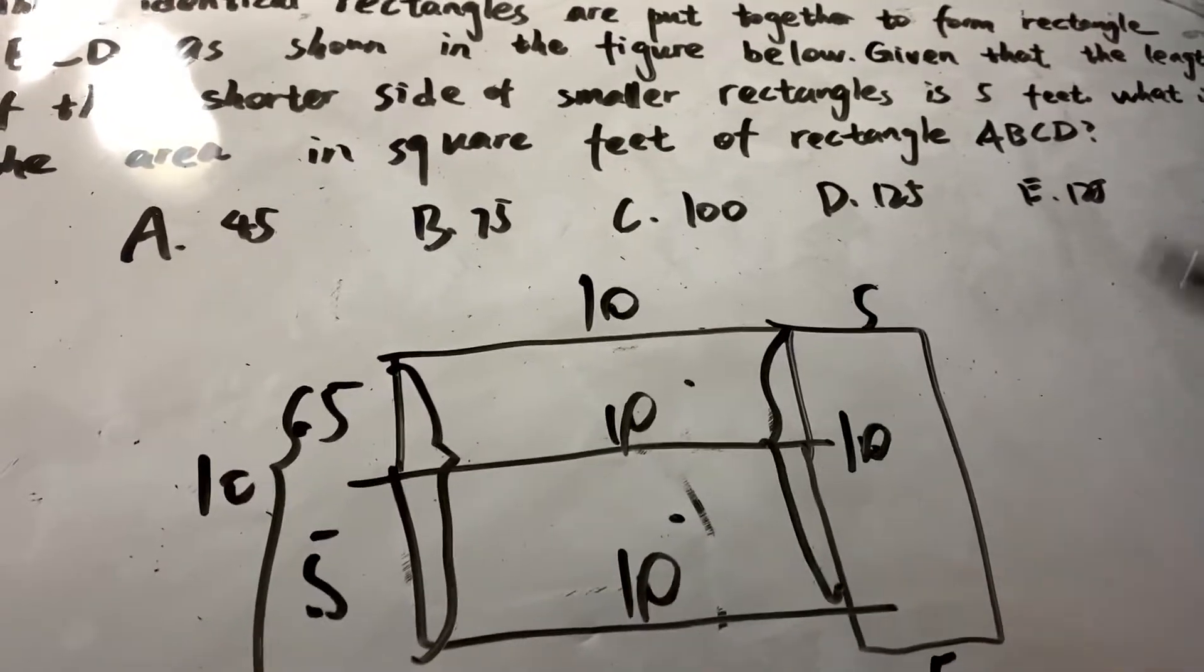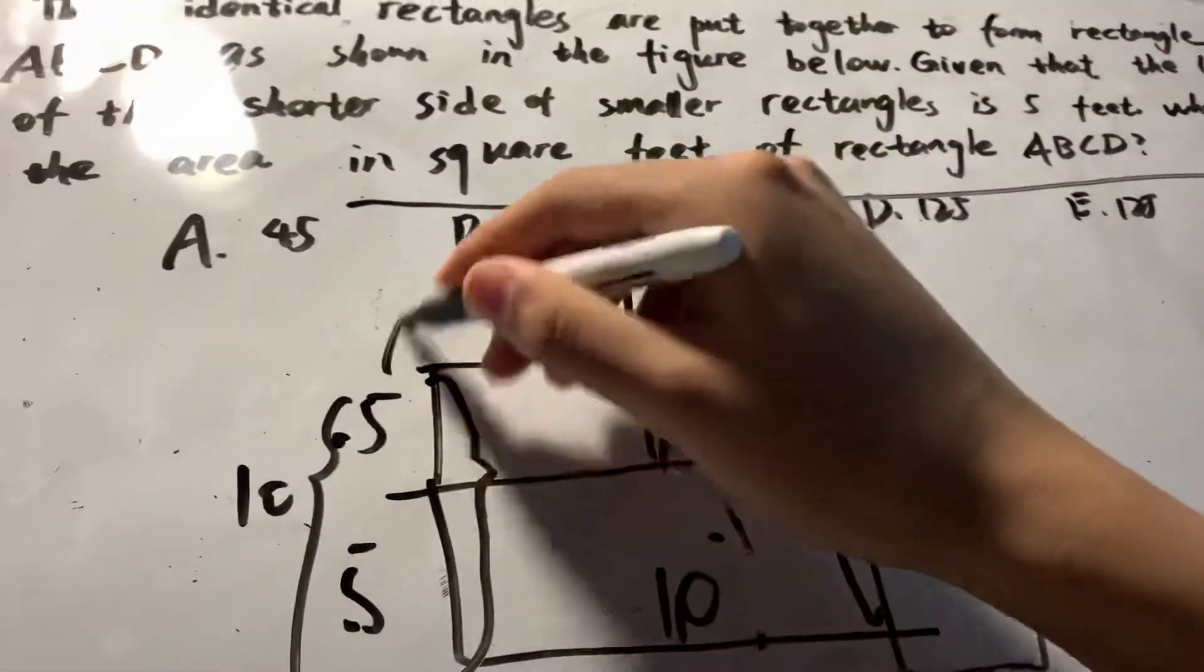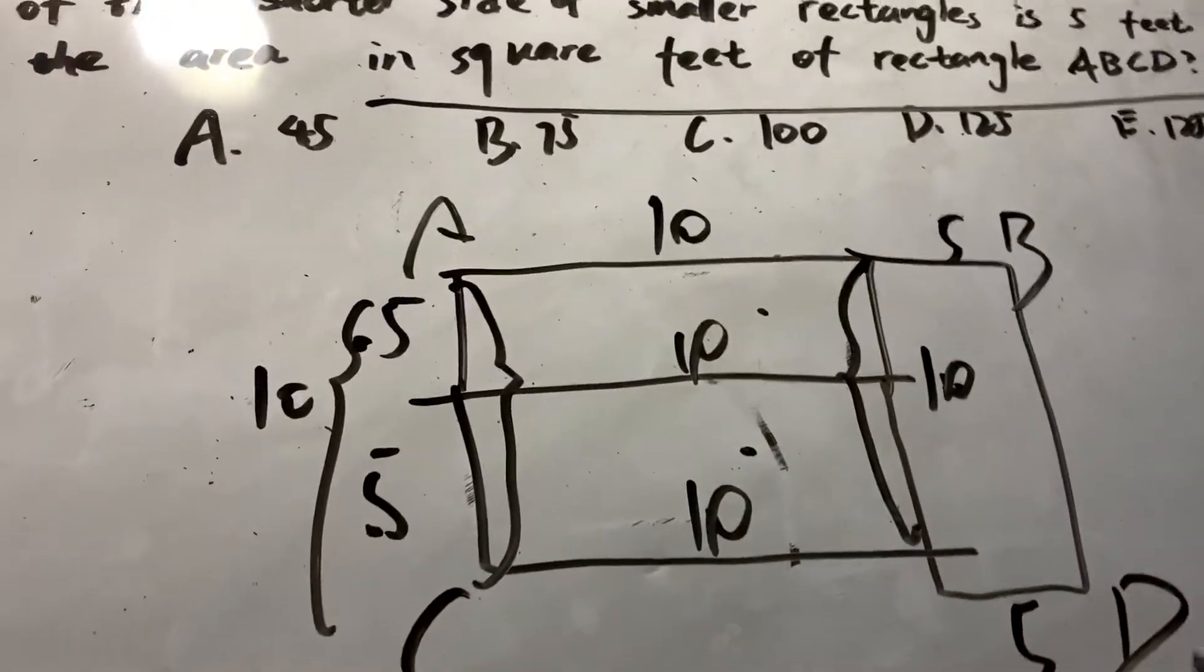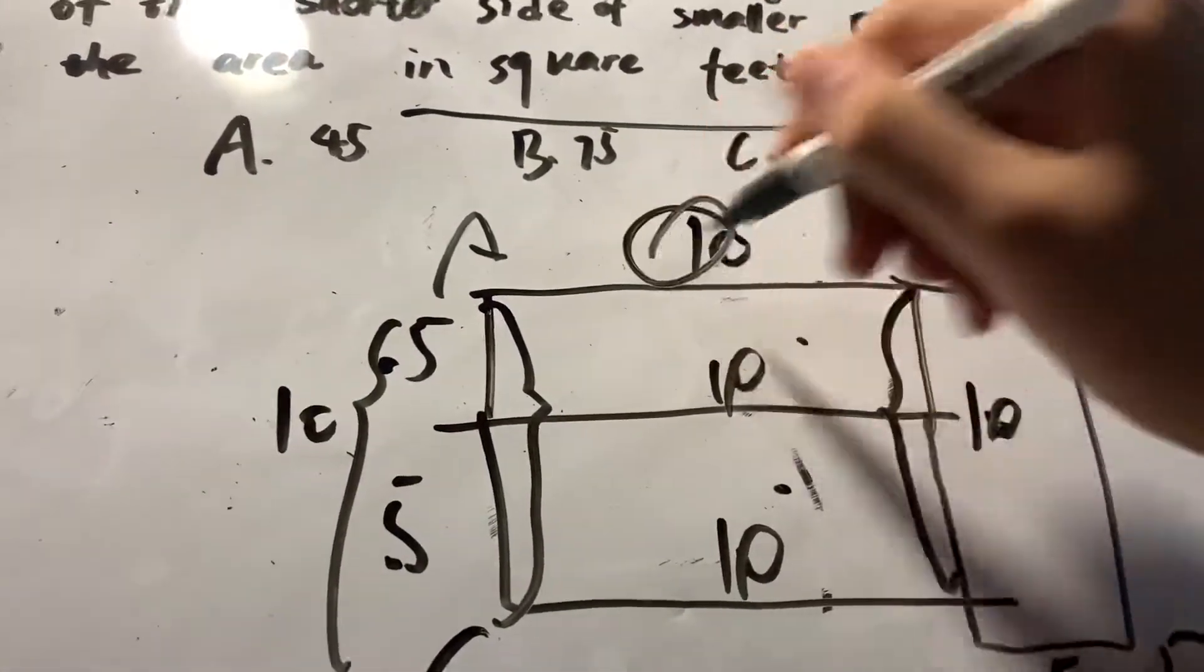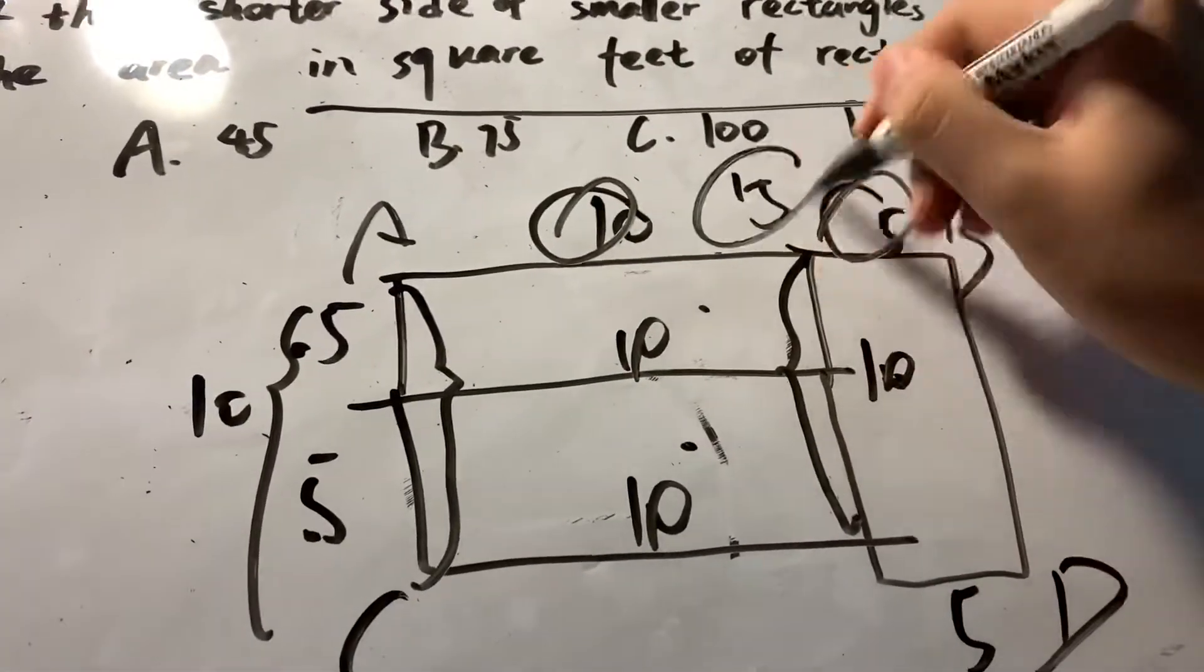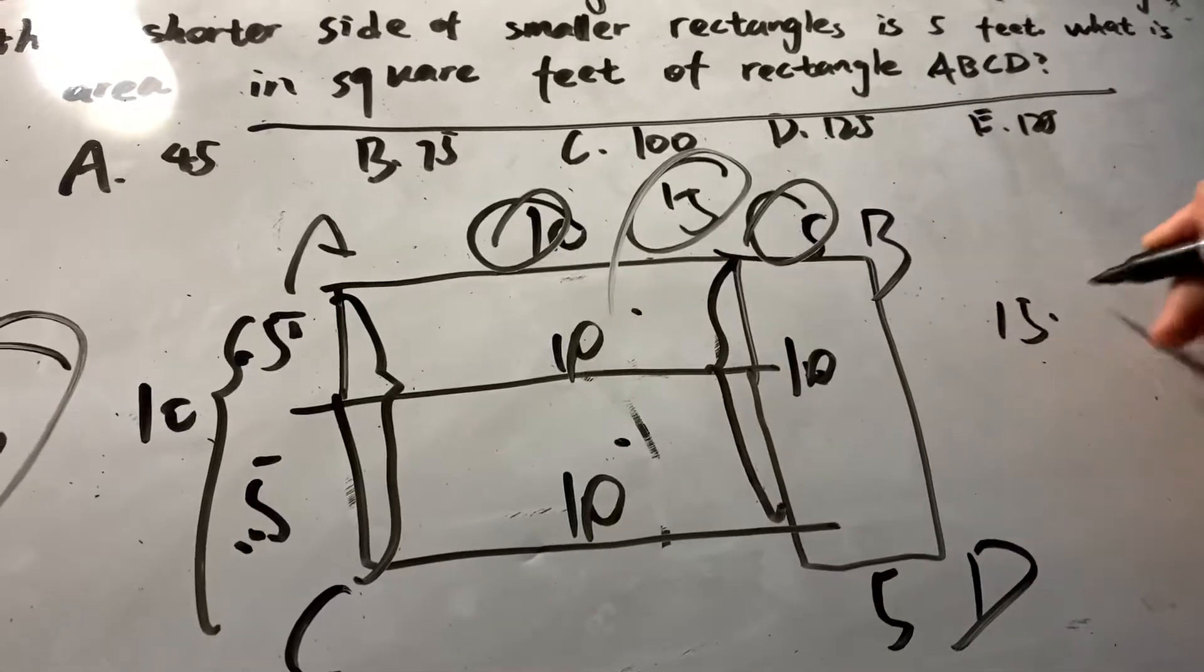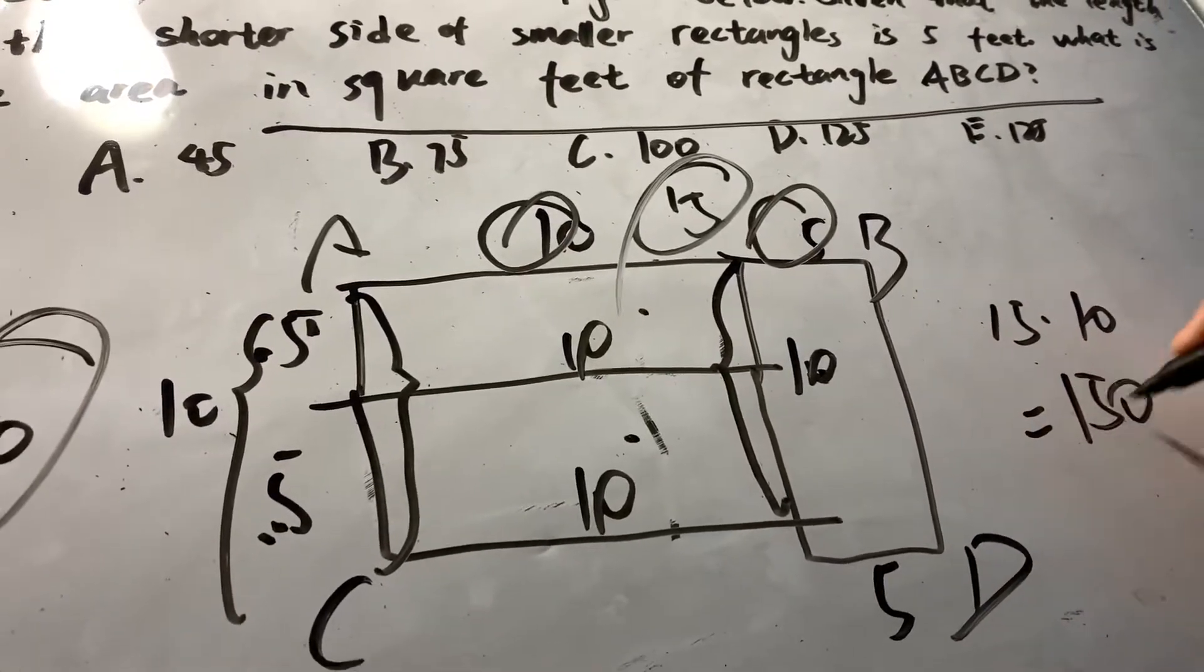And since the question involves us to find the area of the entire rectangle ABCD, we just need to find out the length and the width. We know that the length is 10 plus 5, which is 15, and the width is 5 plus 5 is 10. So the total answer for us is 15 times 10 equals 150.